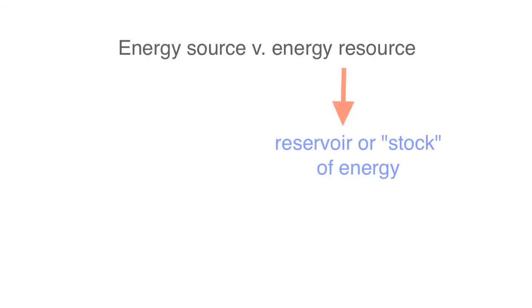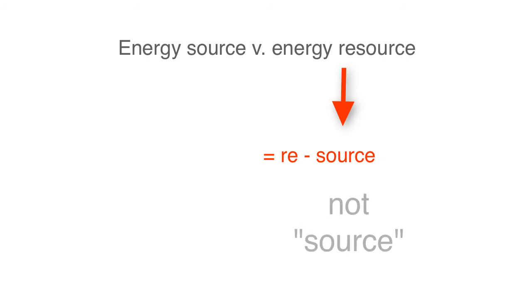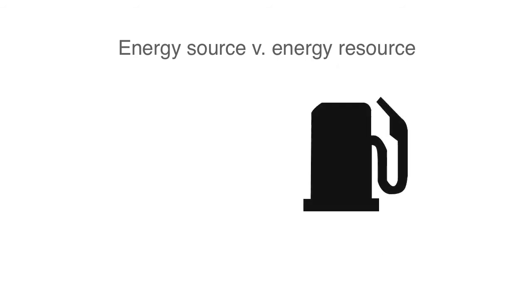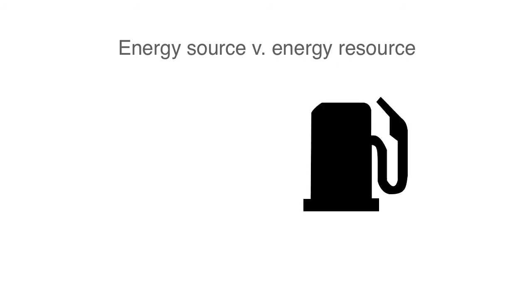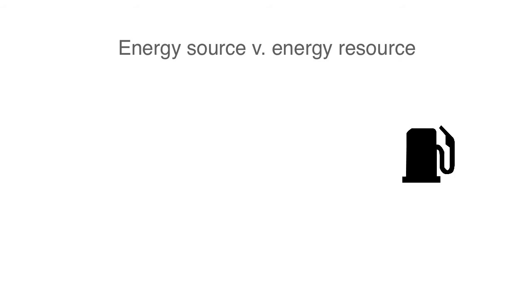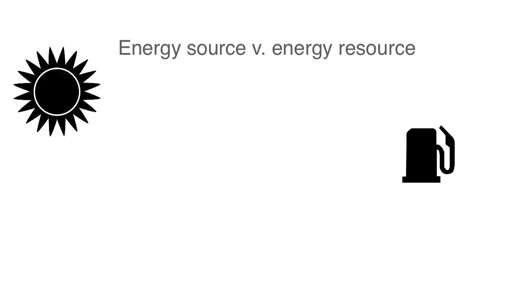Let's think of an energy source versus an energy resource. A resource is a reservoir or stock of energy. It is not an energy source itself, it is a resource. Energy has been stored in it by a source. For example, fossil fuels represent an energy resource. The chemical energy of fossil fuels was stored in it ultimately by the action of the sun, which grew the plants that originally decayed to form fossil fuels.